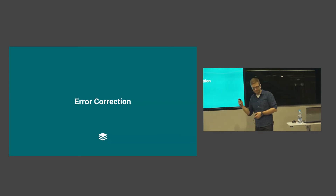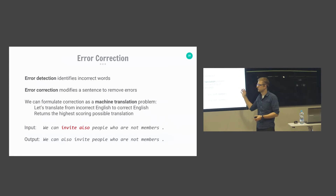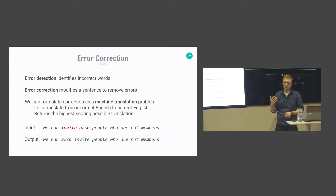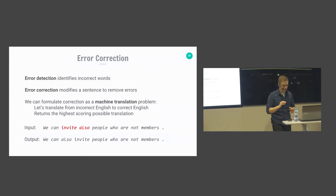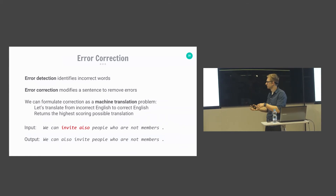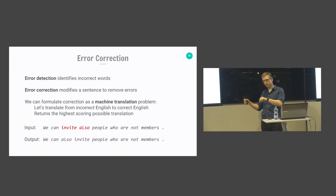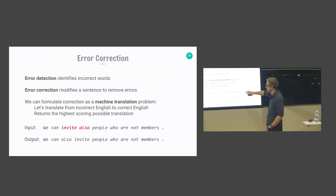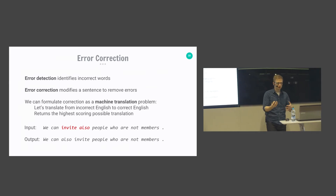Next, let's look at error correction, a very related task. In error detection, we just identify the location of each error. In error correction, we also want to provide corrections for each detected error. For example, given the input 'we can invite also people who are not members,' the model would output the corrected sentence 'we can also invite people who are not members,' with all errors corrected.